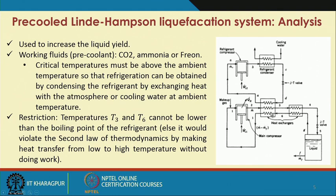Here, instead of a two-channel heat exchanger, we are using a three-channel heat exchanger. The third stream in this three-channel heat exchanger is coming from the auxiliary refrigerant system. This refrigerant system is again based on a simple Linde-Hampson system. The refrigerant helps to cool the process stream further. We are trying to use cooling water from the ambient or ambient air to cool down this refrigerant, so we are not trying to increase our cost of refrigeration. Here again we have a J-T valve to get this cooling.